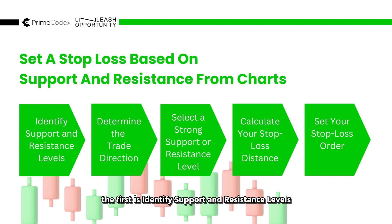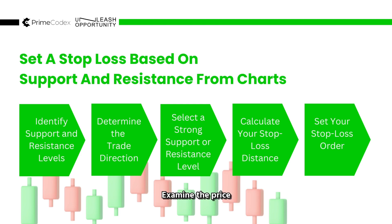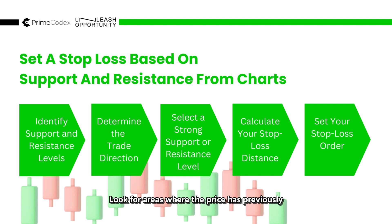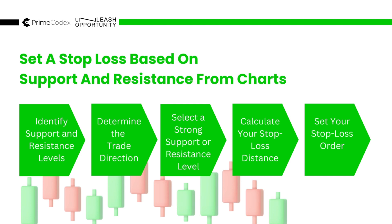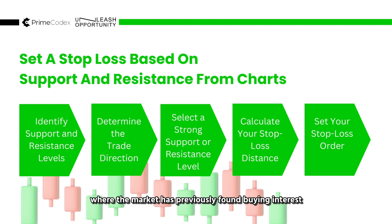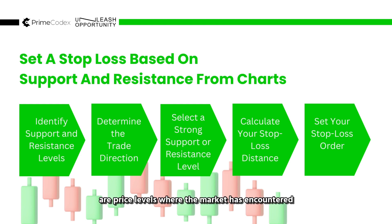The first step is to identify support and resistance levels. Examine the price chart of the currency pair you're trading. Look for areas where the price has previously encountered barriers or reversals — these areas can be identified as support or resistance levels. Support levels are price levels where the market has previously found buying interest and pushed the price higher. Resistance levels are price levels where the market has encountered selling interest and pushed the price lower.